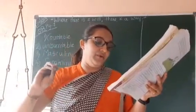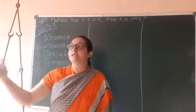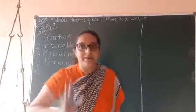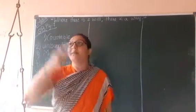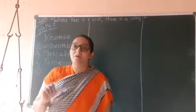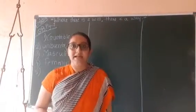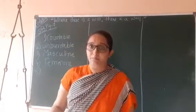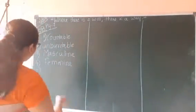A noun is a word that refers to people, places, or things in general. For example, 'country' — I have not mentioned which country. 'City' — I have not mentioned which city. There are many cities and countries but I have not mentioned a particular name. When we are talking in general, that is common noun. For example, 'boy' — there can be many boys but I have not given a particular name, so that is common noun.